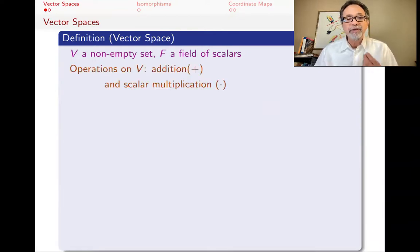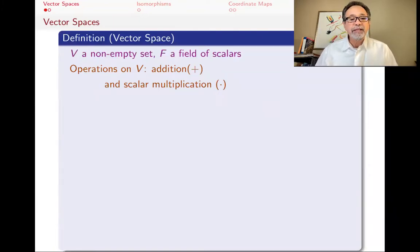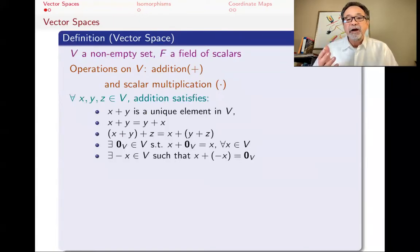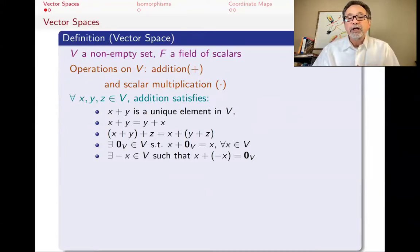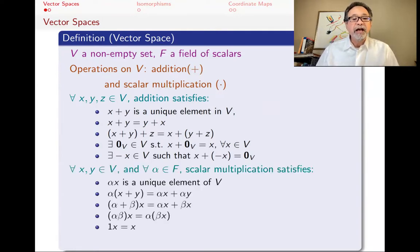We have two operations: addition and scalar multiplication on the elements of V. We can add two elements and multiply scalars by the elements of the vector space, and these operations have a set of properties. Addition has to be commutative, associative, there has to be a zero, and there has to be negatives. And the same thing with scalar multiplication.